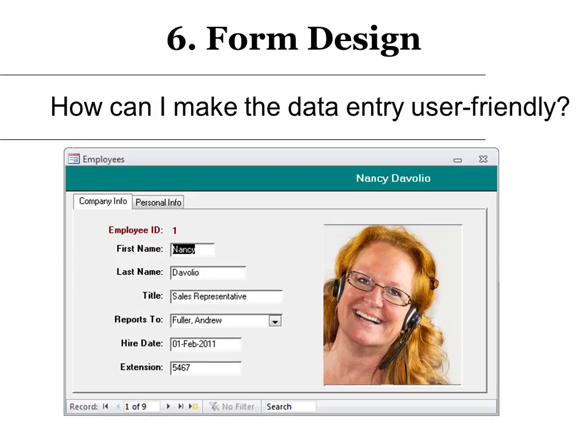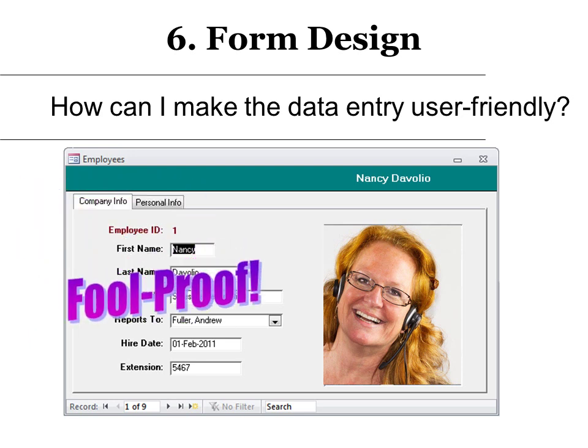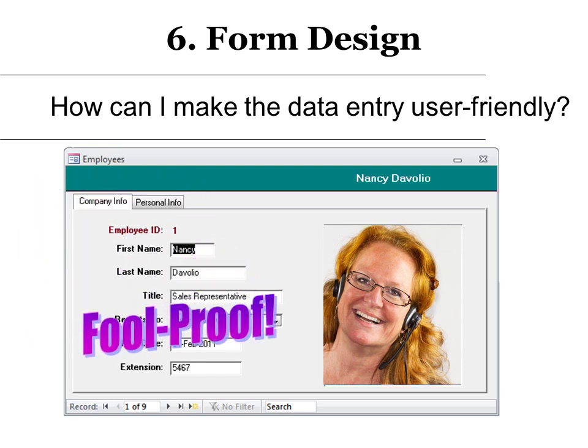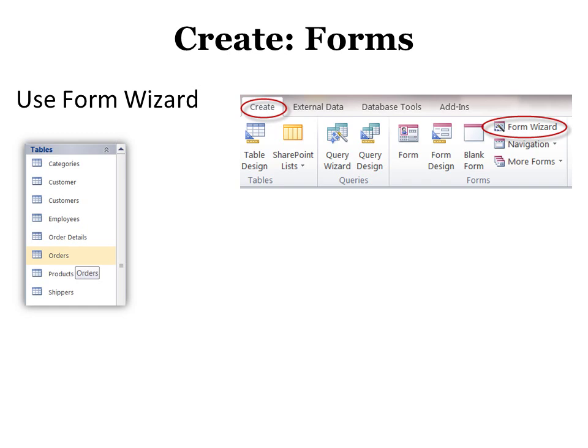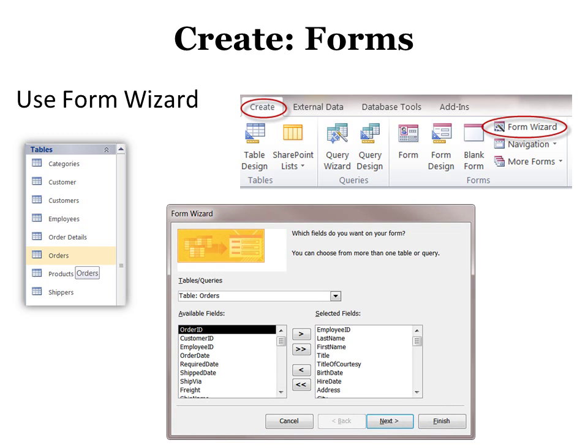Number six in our seven steps is form design — how to make data entry user friendly. I call this foolproof. If I use a form to do data entry, the user finds it very easy. Many users like putting data into Excel, so I may let them do it in a table. However, with a form you can set all kinds of security and allow them to see only the things you want them to see — even just the one record they're doing data entry on. The best way to create a form is to use the form wizard: click on the table you want to create the form from, click Create > Form Wizard, and it walks you through the process with more options than simply clicking Form.